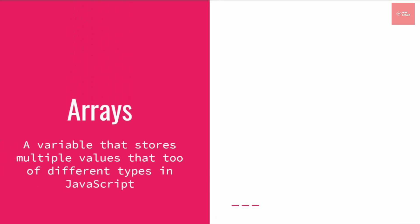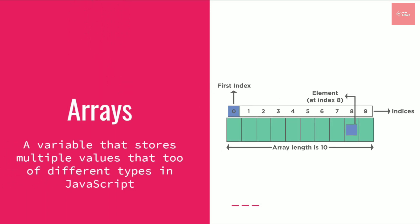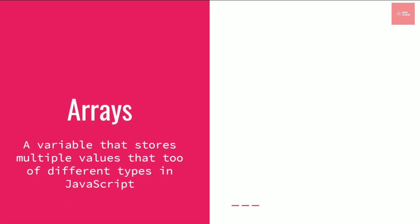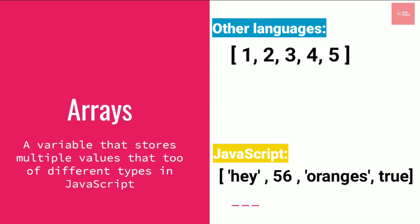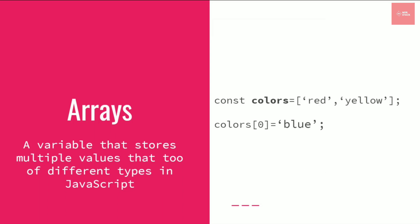The next reference data type is arrays. Arrays are basically a variable that stores multiple values of different types in JavaScript. Unlike other languages where you can only store a single data type inside an array, in JavaScript you can use different data types in the same array.